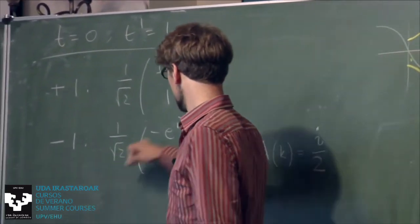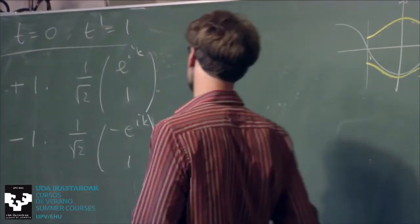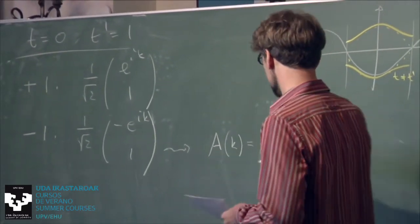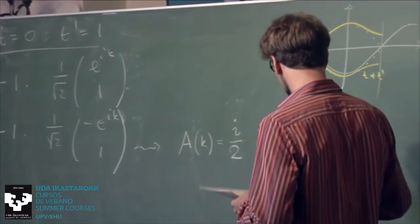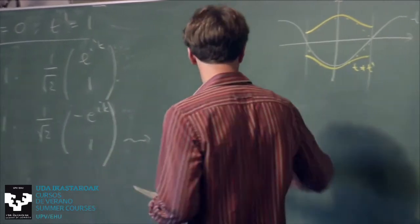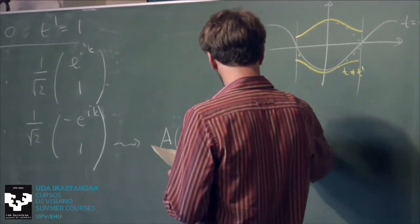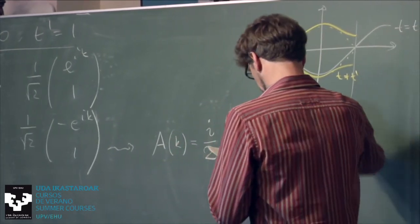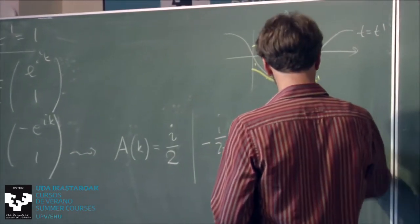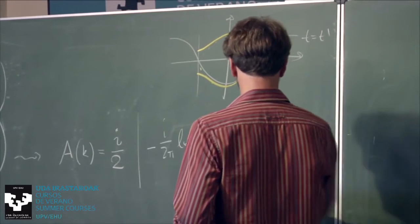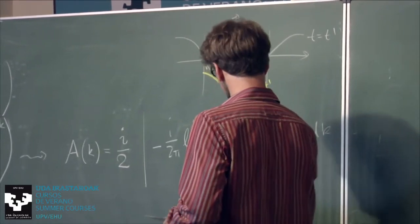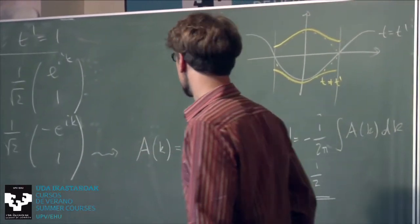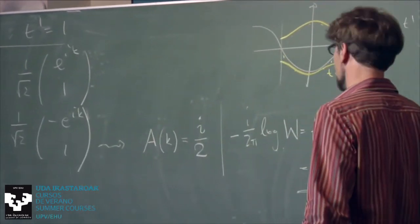Taking the lower band, the Berry connection is A = i/2. The factor of 2 comes from the wave function having equal weight on two sites with only one depending on K. Then −(i/2π) log W = −(i/2π) ∫A dK = 1/2. So for T < T' we get 1/2. For T > T' (T' = 0 limit), the Hamiltonian doesn't depend on K so there's no Berry connection and the Wilson loop gives 0.